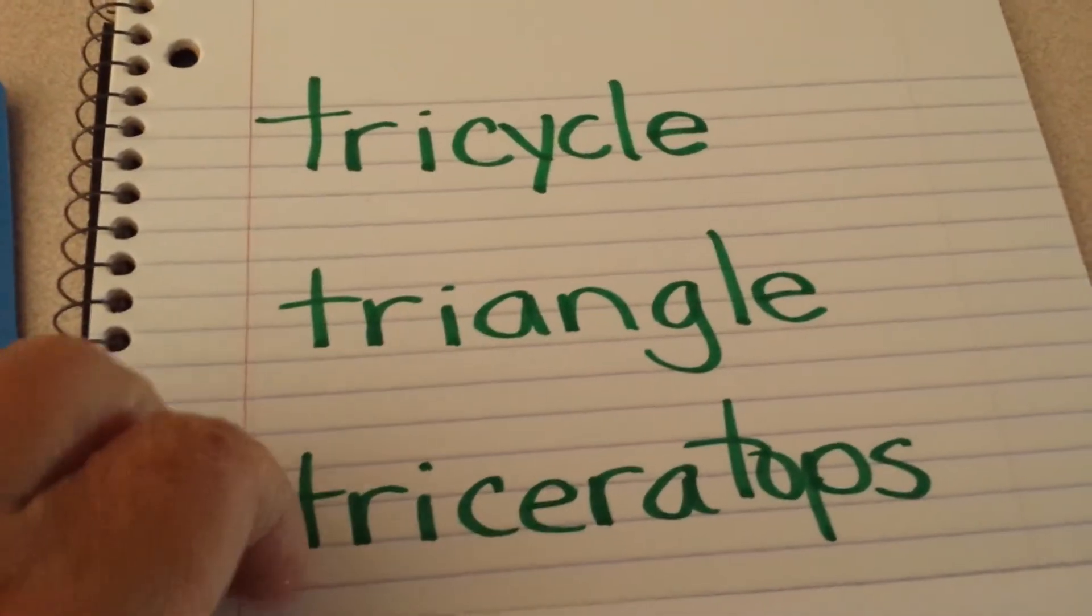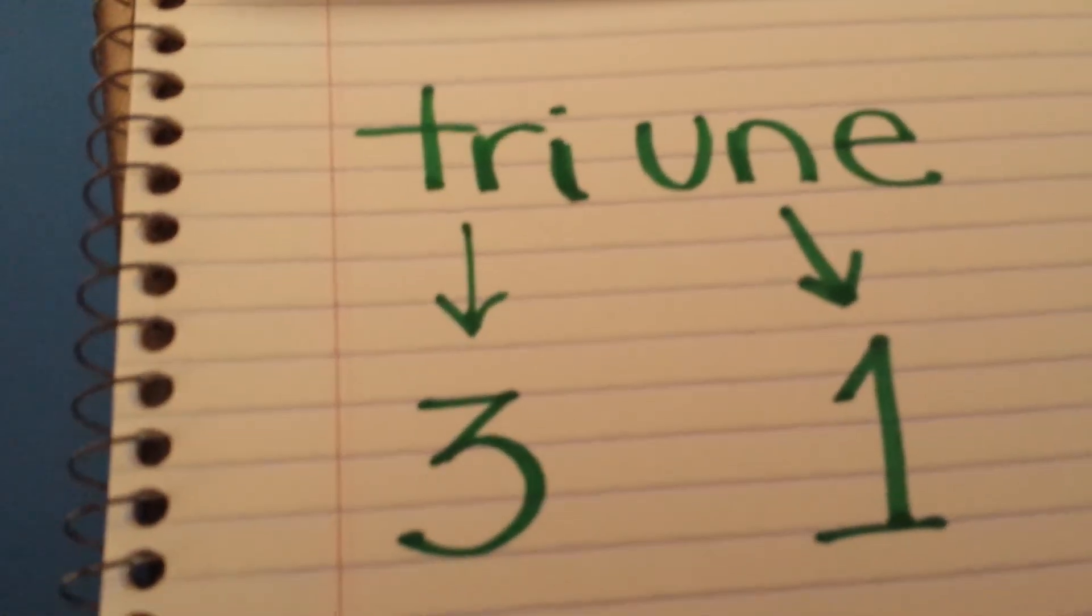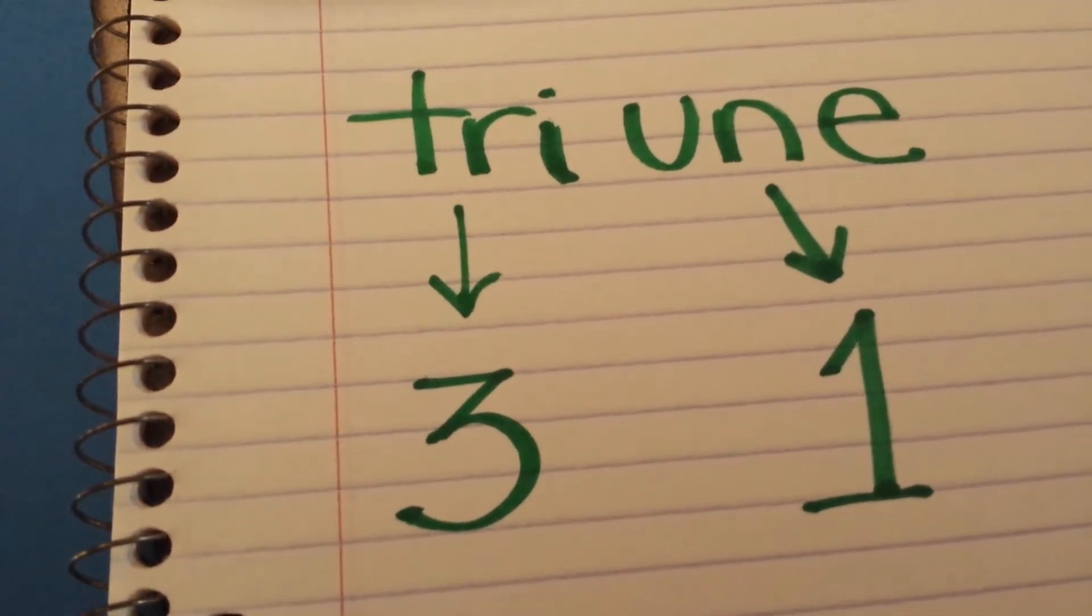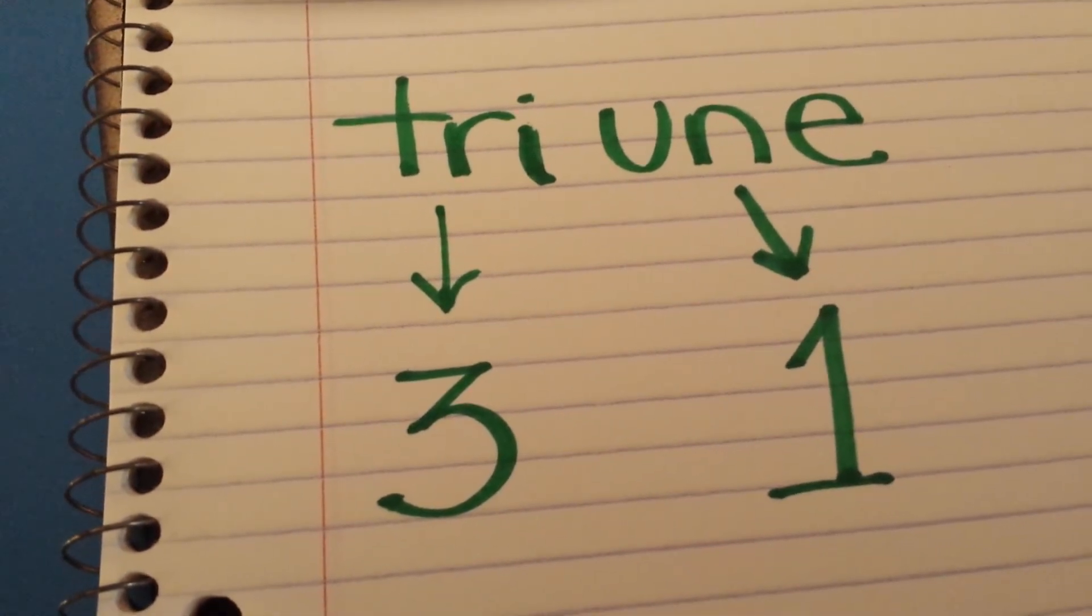When we talk about God, we talk about tri-un. Tri, meaning three, and un, meaning one, like una when you play the card game, uno.